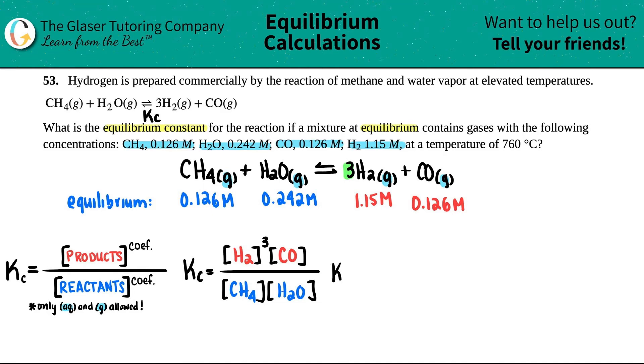Now let's plug in those numbers. The reason why I stressed that this was at equilibrium was only equilibrium values are allowed in this formula. No initial values, no change in values, only equilibrium. Since they gave me the equilibrium, I'm just going to plug them right in. So I got the H2, which was 1.15, close that parentheses, raise it to the third. Moving on to the CO, I got 0.126. Close that up. Let's divide it by the CH4, which was 0.126. Close that up. And then times by 0.242.